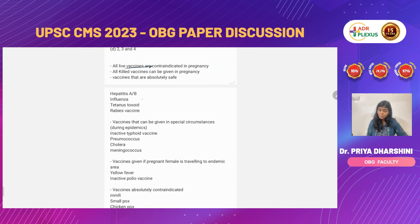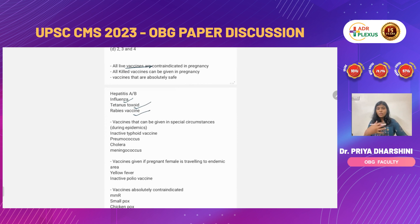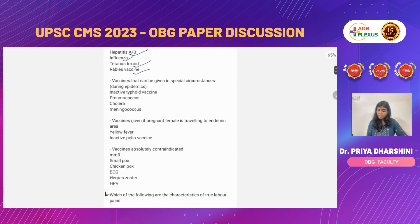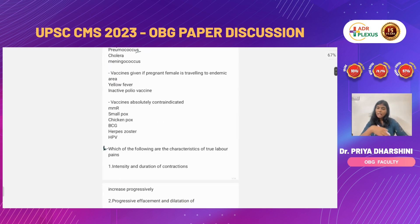The vaccine routinely given to all pregnant women is tetanus toxoid (TT) — first and second dose with a four-week gap. Rabies and influenza can also be given, though influenza is not routine. Hepatitis A can be given. In special circumstances such as an epidemic, inactive typhoid, pneumococcus, meningococcus, and cholera vaccines can be given. For travel to endemic zones, yellow fever and inactivated polio vaccine are options.